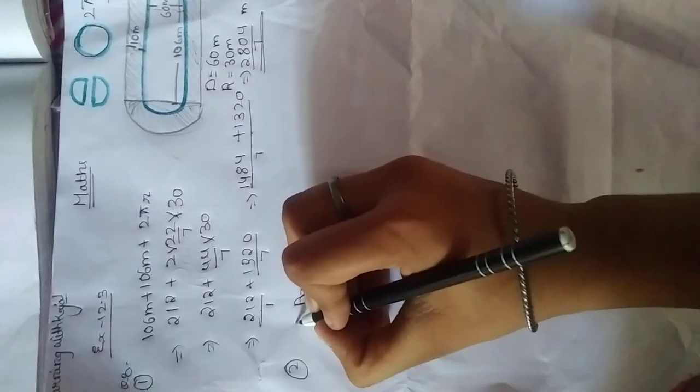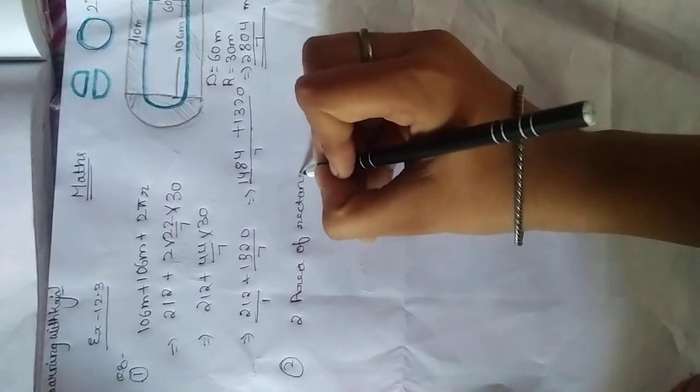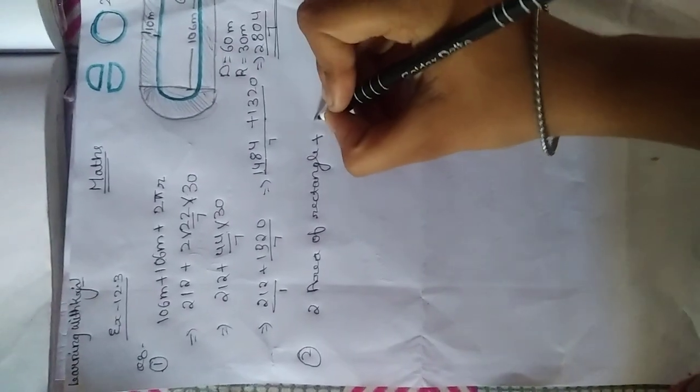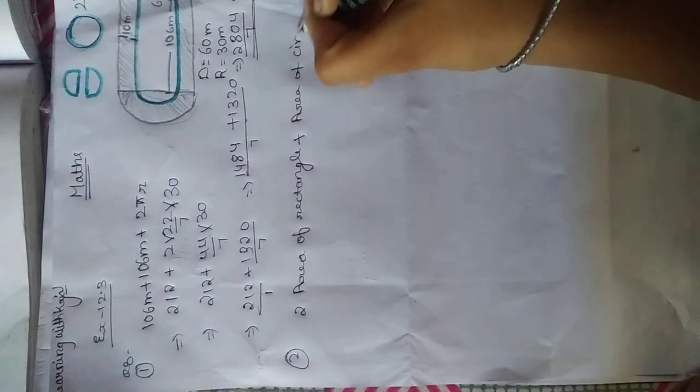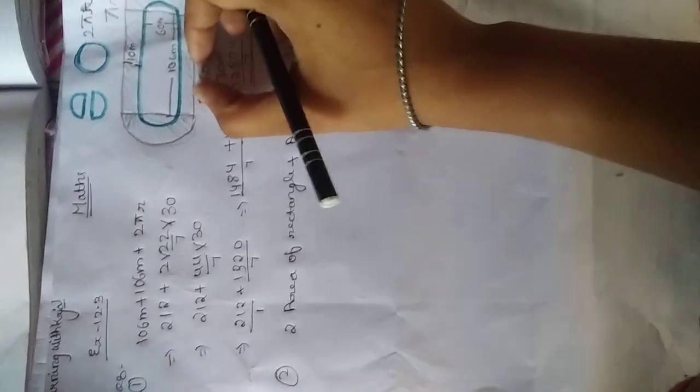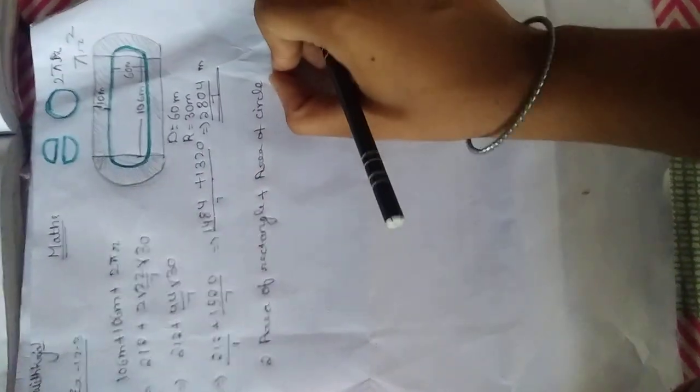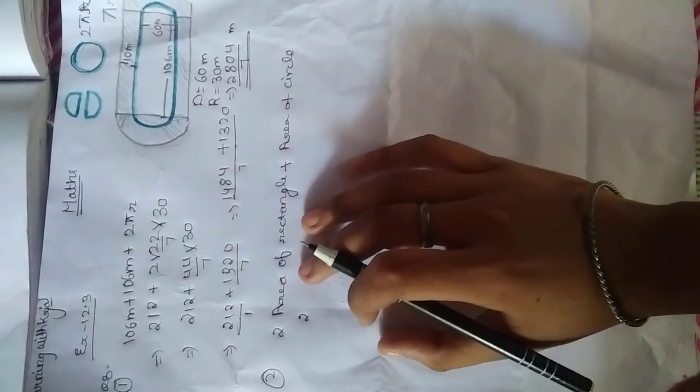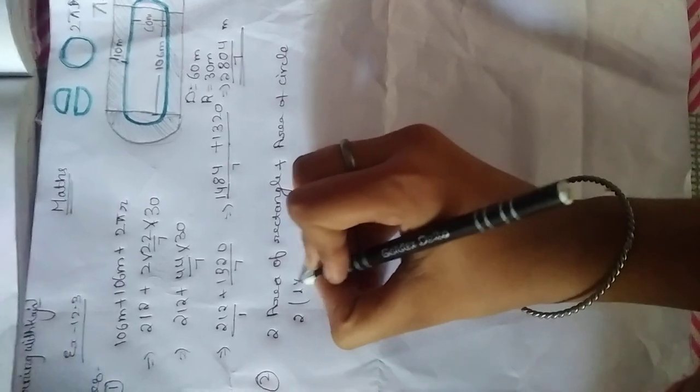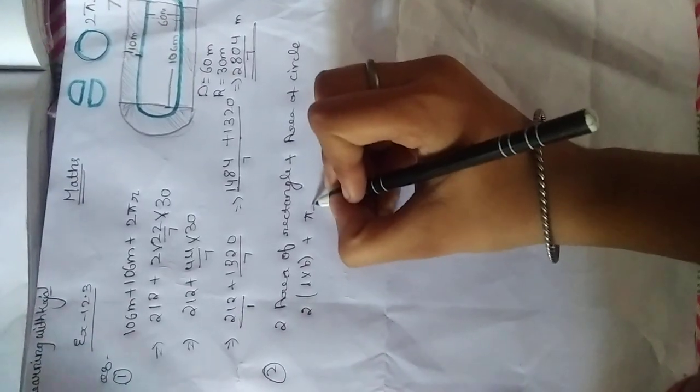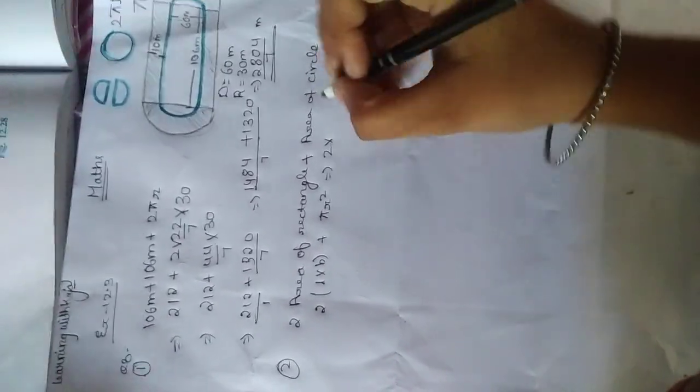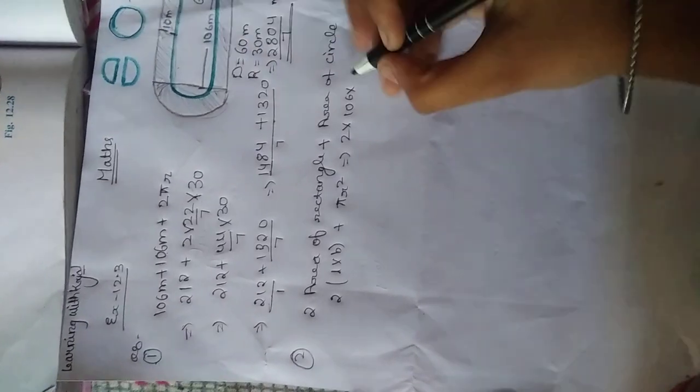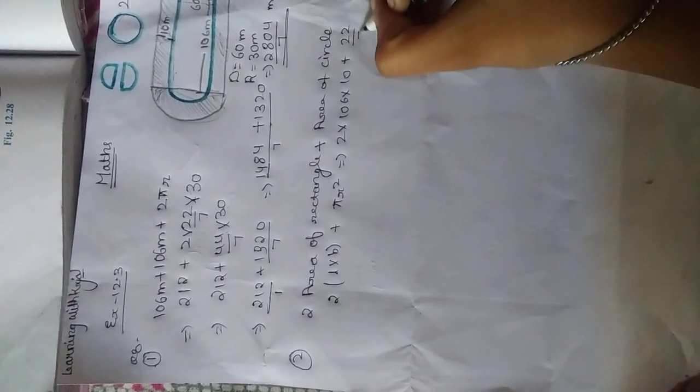Area of two rectangles - first and second, both we add, to area of circle. Because when two semicircles are added it makes only one circle. Its area is called area of circle and its perimeter means its edge is called circumference of circle and perimeter of circle. So let's find the shaded region: 2 × l × b, area of circle πr². What is l? 106 and 10 meter wide.